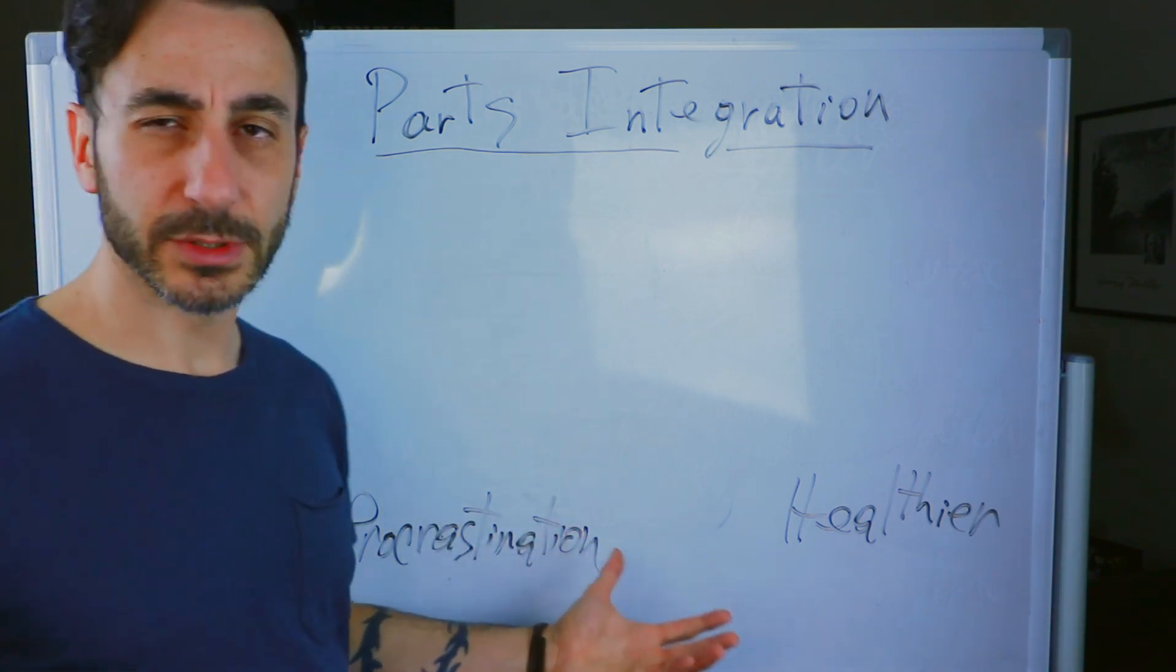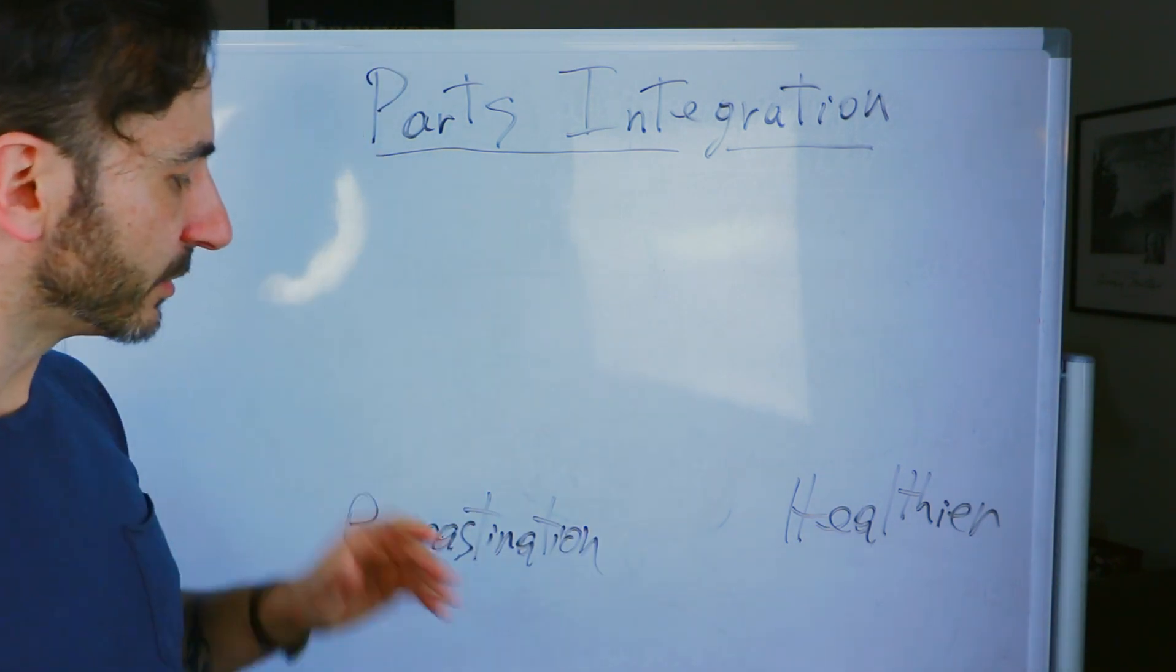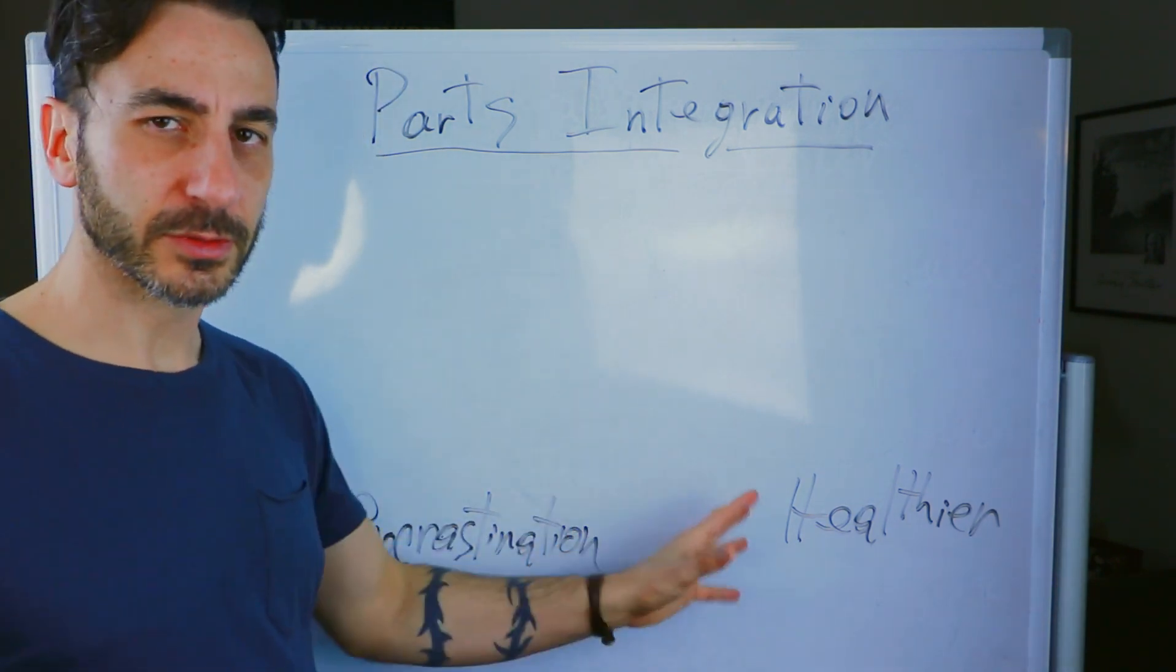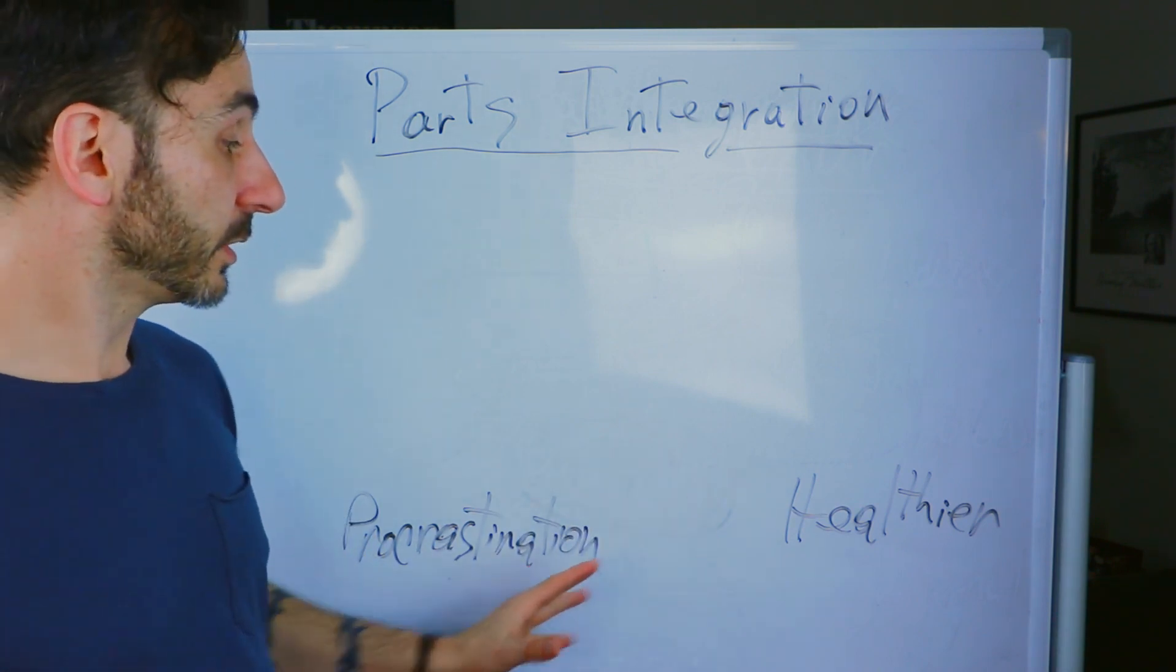And again, you don't have to use this example. You could use any other example. You just want to determine the two parts, just give them a name to work with.